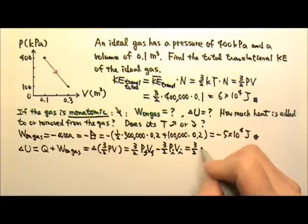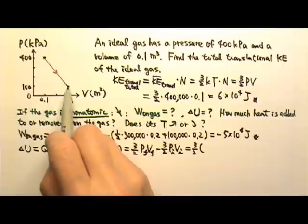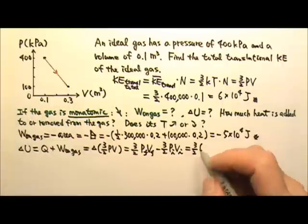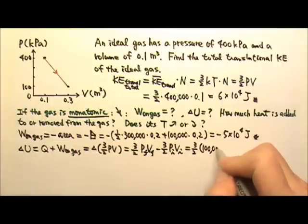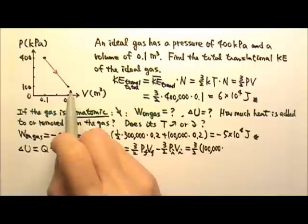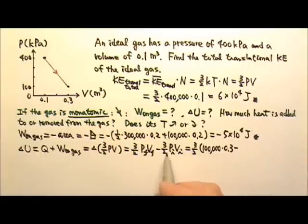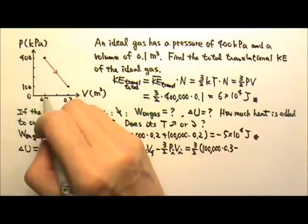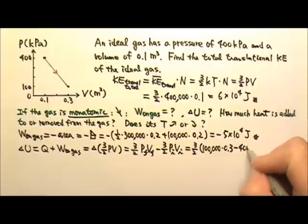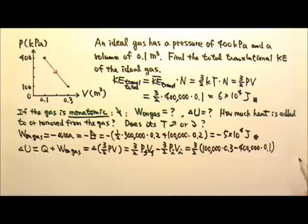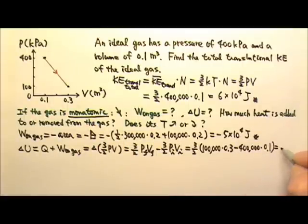So ΔU = (3/2)(PV_final − PV_initial). The final pressure is 100,000 pascals and the final volume is 0.3 cubic meters. The initial pressure is 400,000 pascals and the initial volume is 0.1 cubic meters. This gives us ΔU = negative 1.5×10⁴ joules.